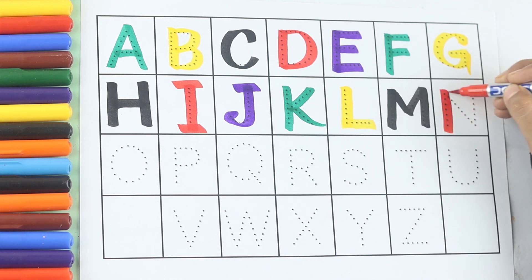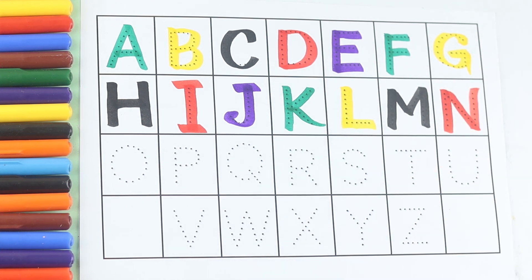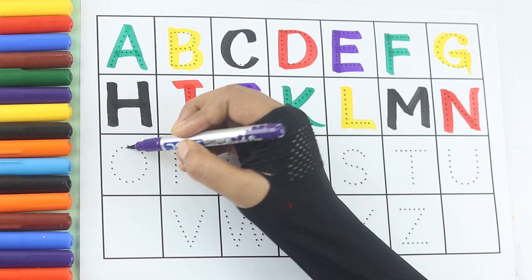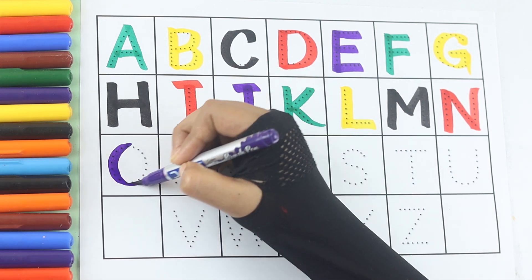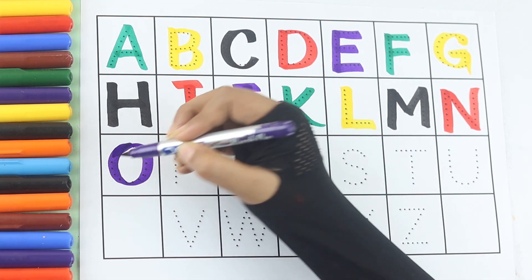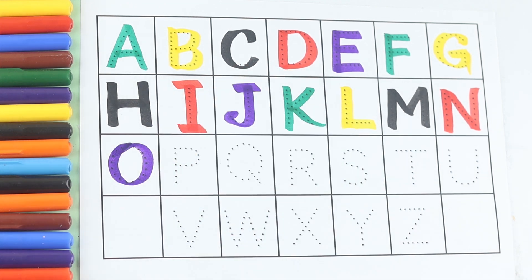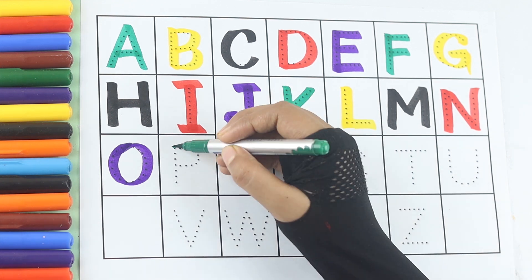Red color. N, N for nest, N for nest. Violet color. O, O for orange, O for orange. Green color.